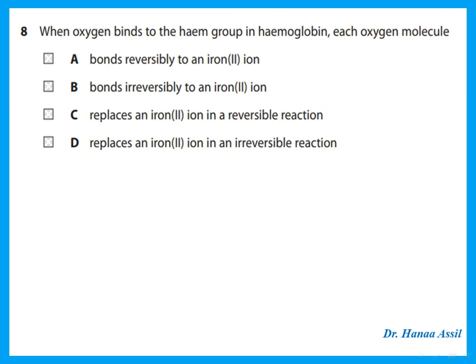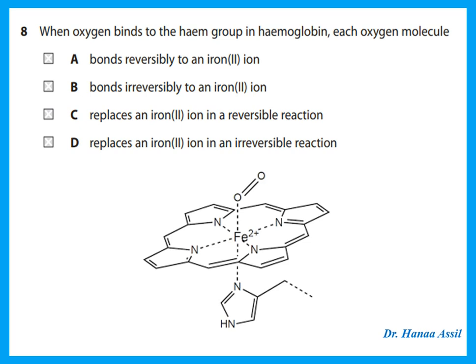When oxygen binds to hemoglobin, each oxygen molecule binds reversibly to the Fe²⁺ at the centre of the heme group. When there is plenty of oxygen, it binds to hemoglobin; when surrounding cells have less oxygen, it is released. So oxygen binds to the Fe²⁺ in the heme group of hemoglobin reversibly.